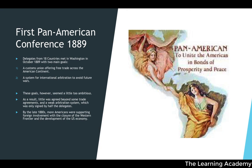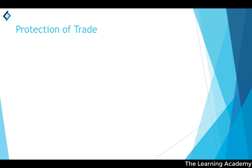By the late 1880s, more Americans were supporting foreign involvement as the memory of the Civil War faded and the Western Frontier closed. A move away from isolationist foreign policy became an important part of American culture. Despite this, the US army remained limited to around 25,000 men by the 1880s, and calls for naval expansion were rebuffed until the following decade.